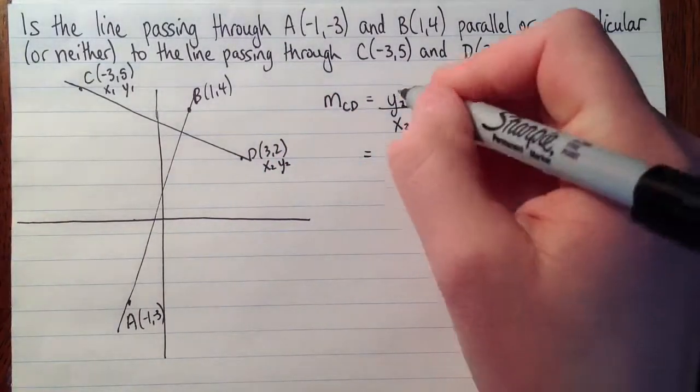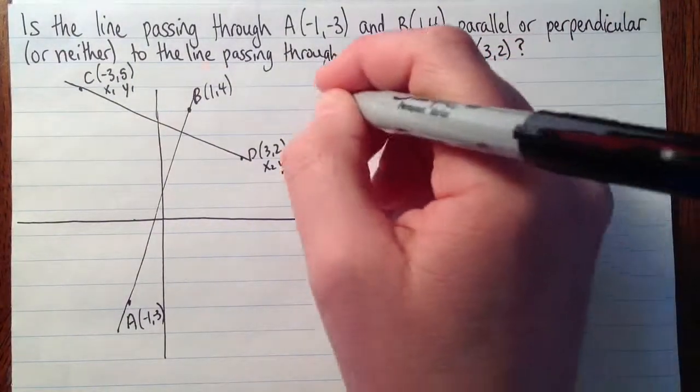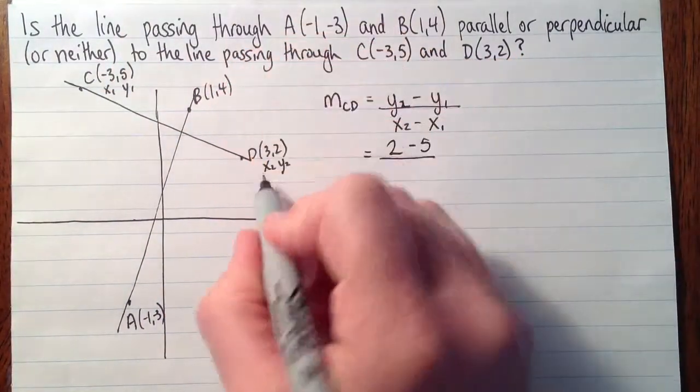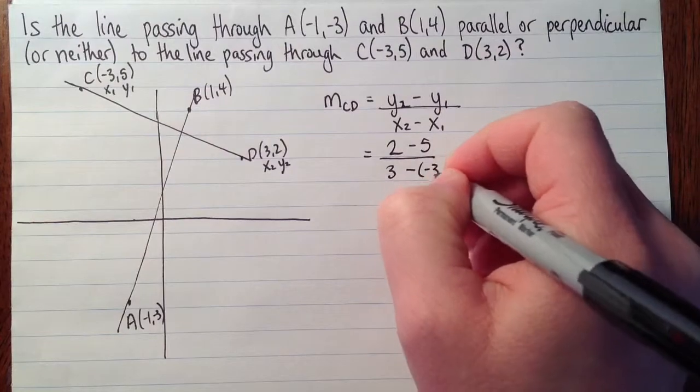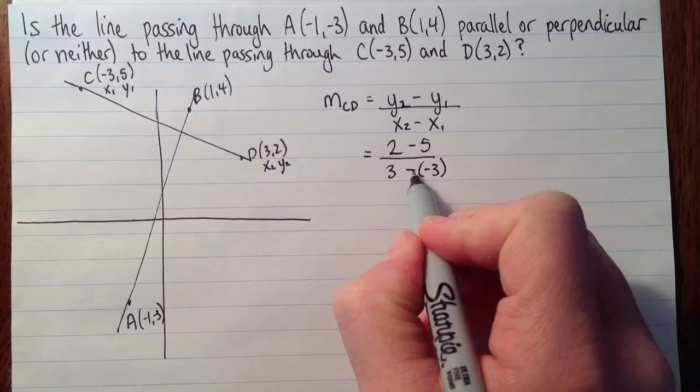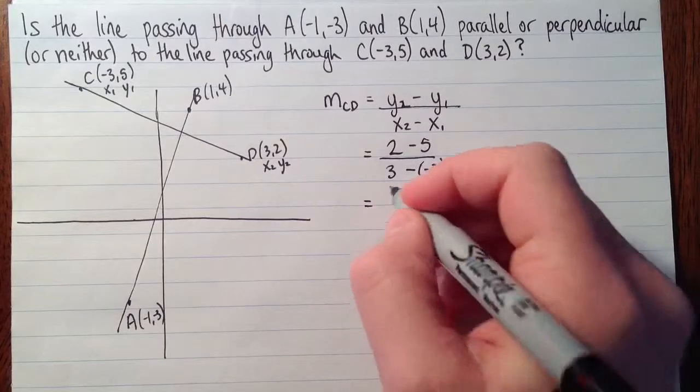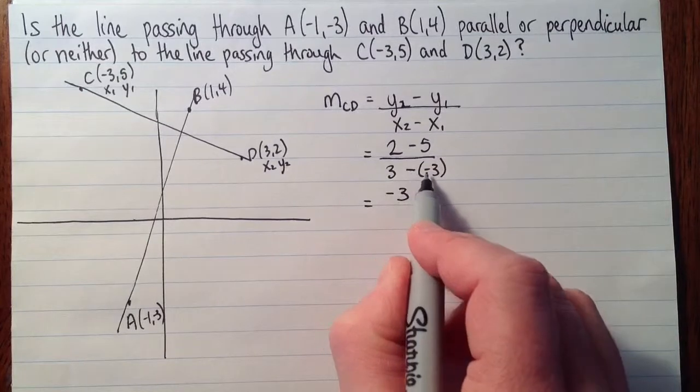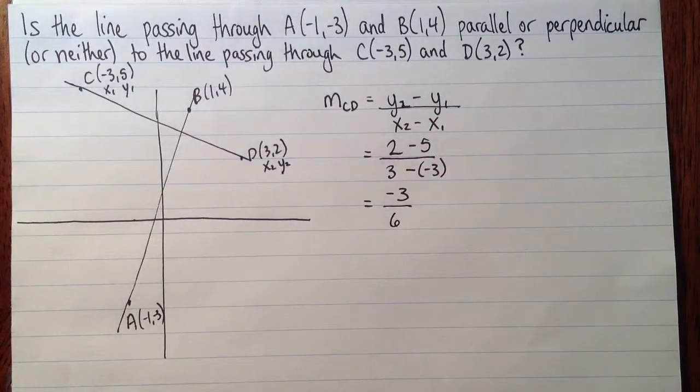So now I'll substitute, and I'll be real careful of the signs. So y2 is 2. Take away y1, that's 5. And then x2 here is 3. And we're subtracting x1, which is -3. So when you substitute negative numbers in here, we're subtracting negative numbers. Be really careful of that sign. Make sure we're subtracting a negative number. So 2 minus 5, that's -3. And 3 subtract -3. So that's 3 plus 3. So that's 6.